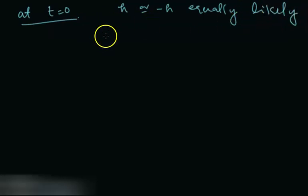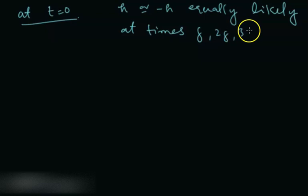And they are equally likely at times delta, 2 delta, 3 delta, 4 delta, 5 delta, till n delta, n times delta.